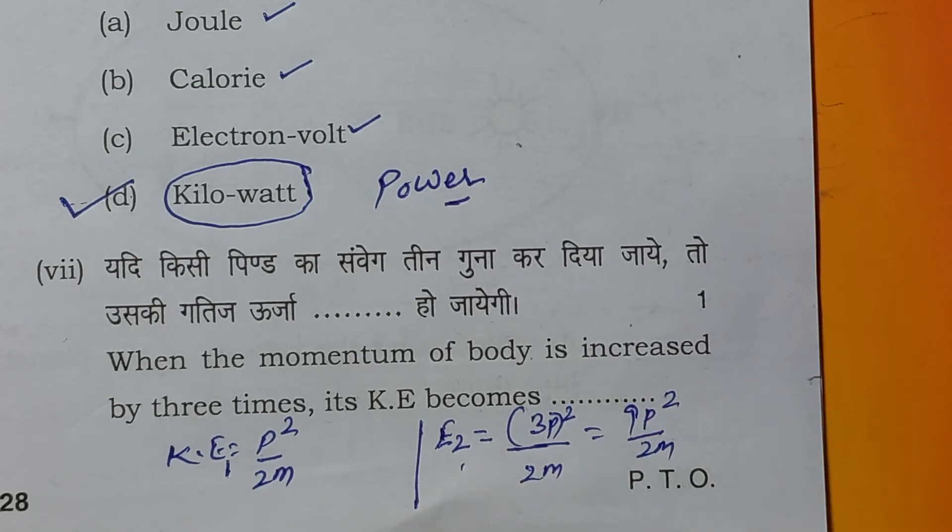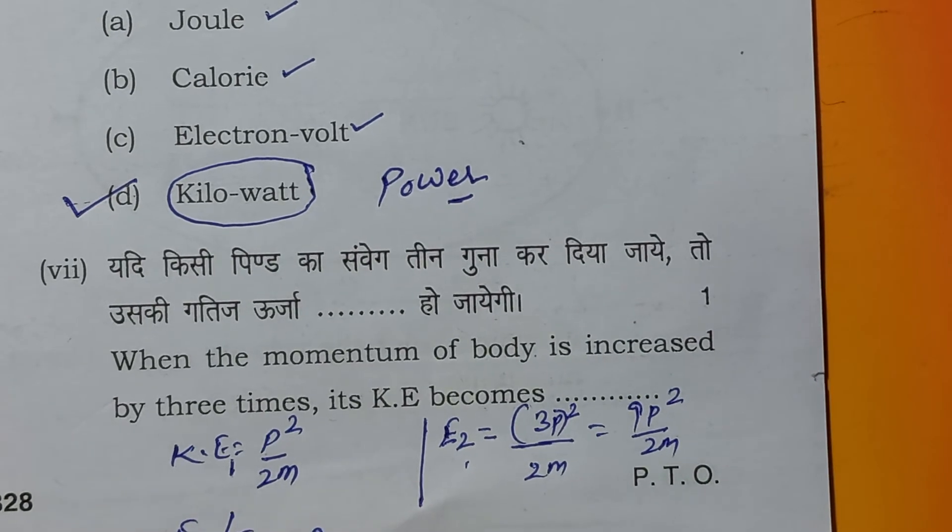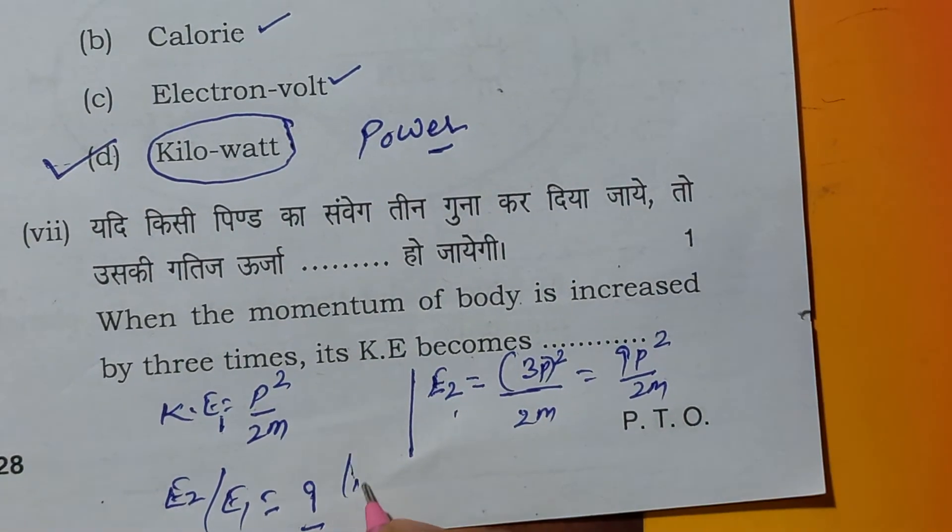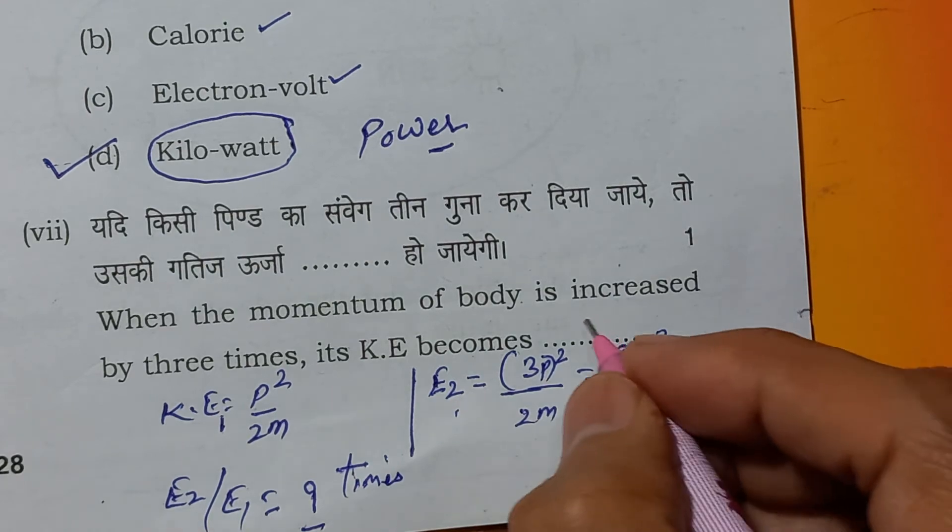Dividing E2 by E1, E2 by E1, you can see it will be 9. That means 9 times. Kinetic energy becomes 9 times.